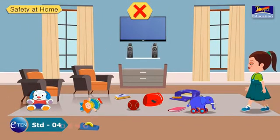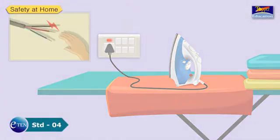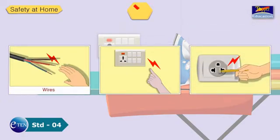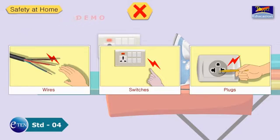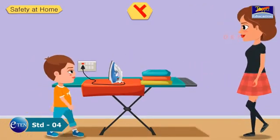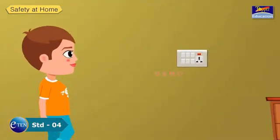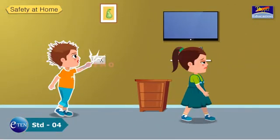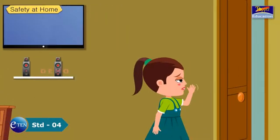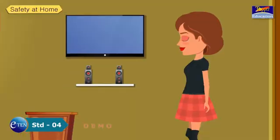You or someone else may trip over them and get hurt. Never play with electric wires, switches and plugs with wet hands, as you can get an electric shock. Children should never use electric gadgets on their own. Never touch a person who is under electric shock. Call for help immediately and ask your elders to switch off the main switches.